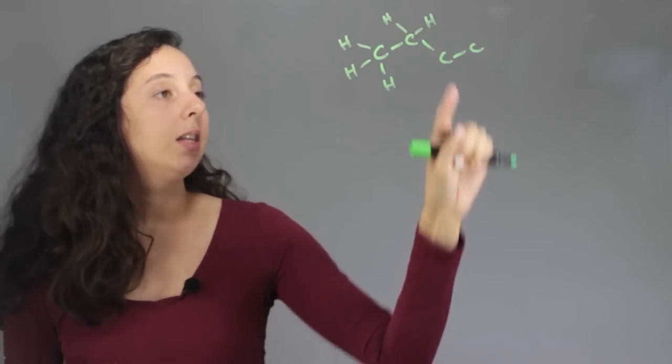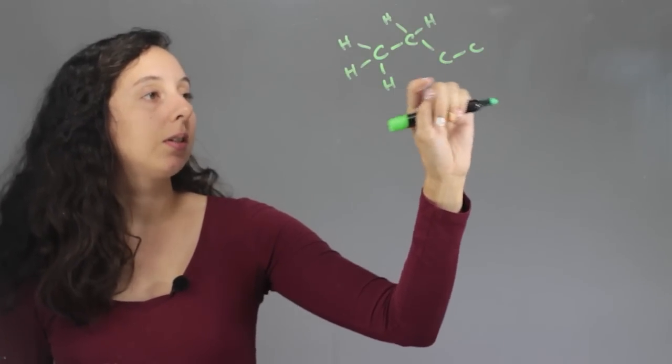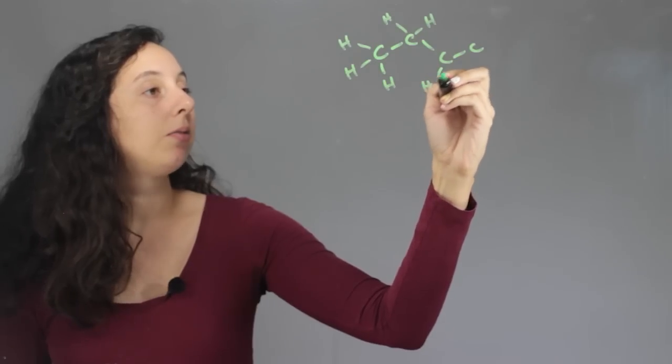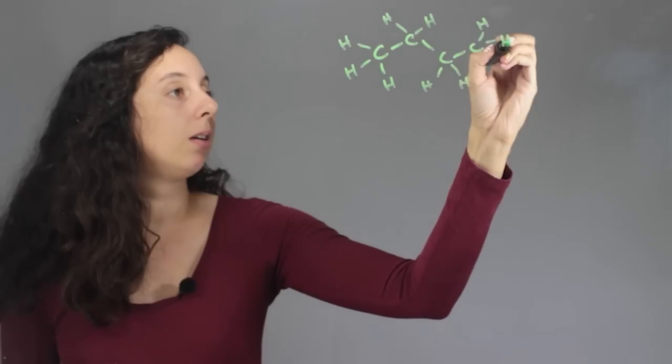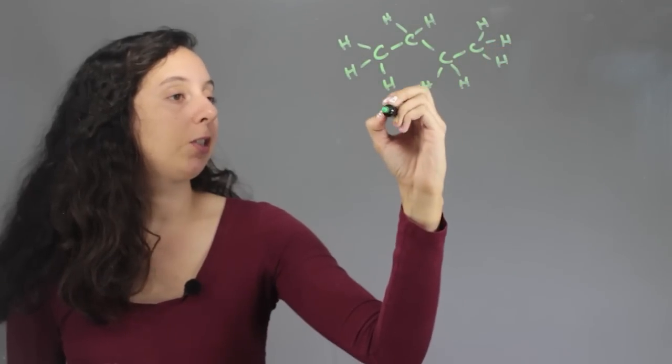So for instance, this carbon already has two bonds to the other carbons, so it can only have two more bonds, so two hydrogens. This one's on the end, it can have three. This happens to be butane.